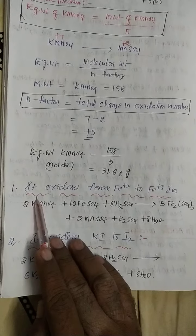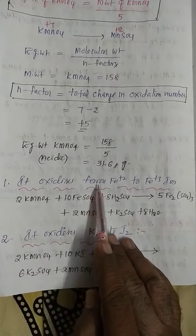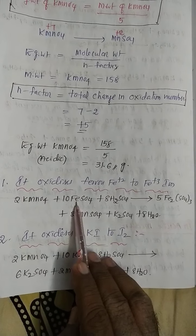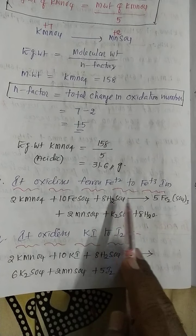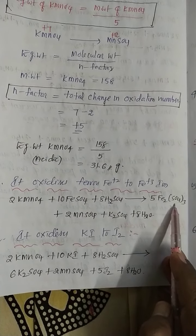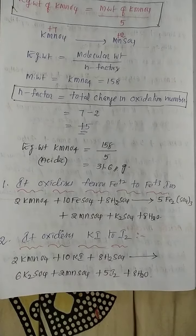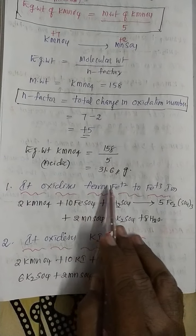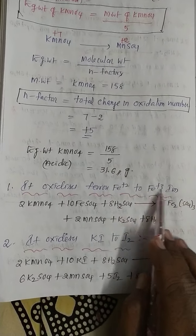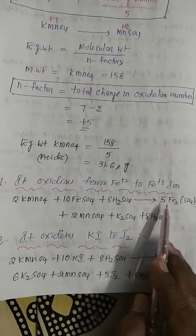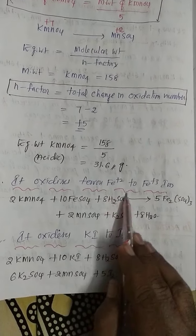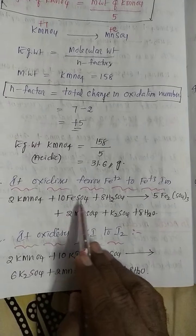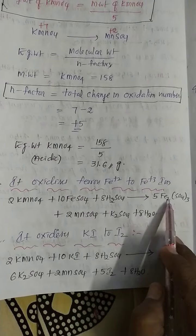In acidic medium, KMnO4 oxidizes ferrous ion to ferric ion. KMnO4 reacts with ferrous sulfate in the presence of sulfuric acid, converting it to ferric sulfate. This is an important equation from the board exam perspective. The oxidation state of iron changes from plus 2 to plus 3 in the presence of sulfuric acid.